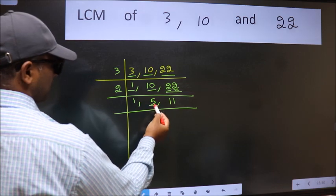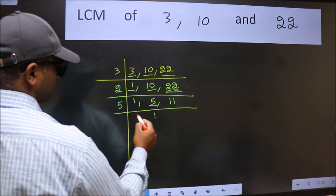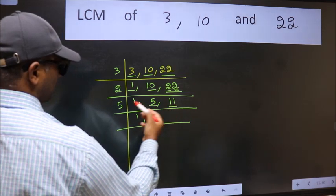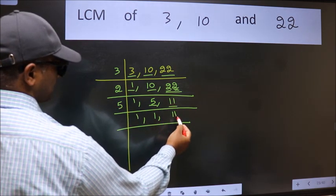Now here we have 5. 5 is a prime number, so 5 goes into 5 once. The other number, 11, not divisible by 5, so we write it down as it is.